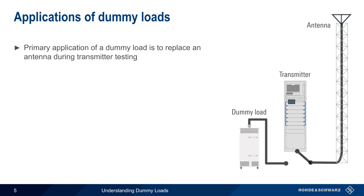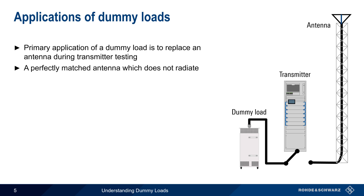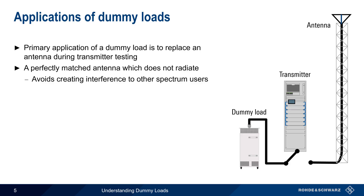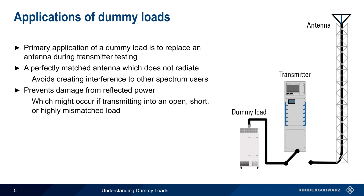One of the primary applications of dummy loads is to replace an antenna during transmitter testing. A dummy load acts as a perfectly matched antenna which does not radiate, thus helping to avoid creating interference to other spectrum users. Perhaps more importantly, a dummy load also prevents damage from high levels of reflected power, which could occur if the transmitter were operated into an open, short, or highly mismatched load.